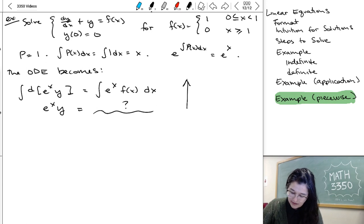So our function looks like this. So here's x, here's f. And from 0 to 1, it's up here at 1. And from 1 on, it's down here at 0. Just like that.